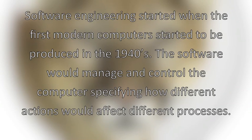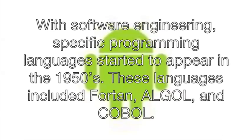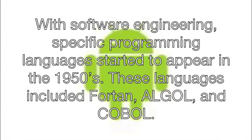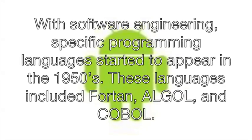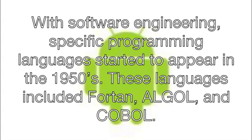Software engineering began when the first modern computers started to be produced in the 1940s. The software would manage and control the computers, specifying how different actions would affect different processes. With software engineering, specific programming languages started to appear in the 1950s.